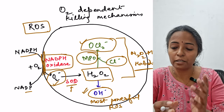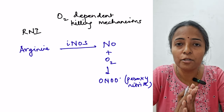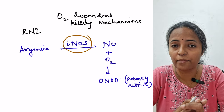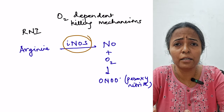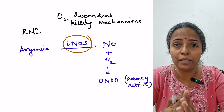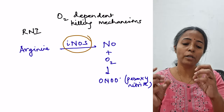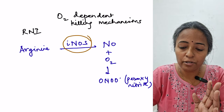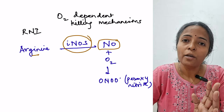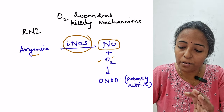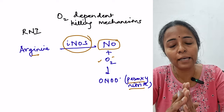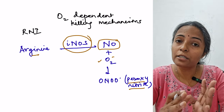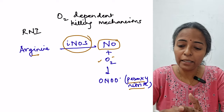Moving on to reactive nitrogen intermediates (RNI): phagocytes have an enzyme called inducible nitric oxide synthase (iNOS). There are different types — endothelial, neuronal, and inducible. When PAMPs interact with toll-like receptors, iNOS is activated. It converts arginine to nitric oxide, which combines with superoxide ion to form peroxynitrite. Peroxynitrite acts by the same mechanism — oxidizing lipids and proteins of the microbial membrane. These are the oxygen-dependent killing mechanisms.